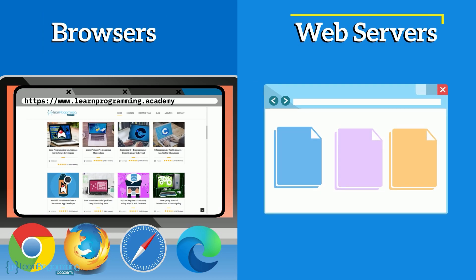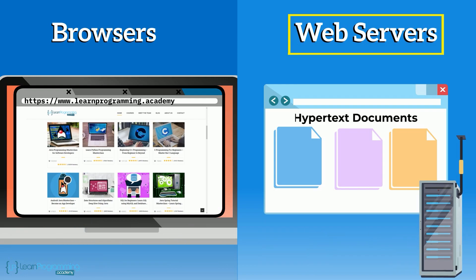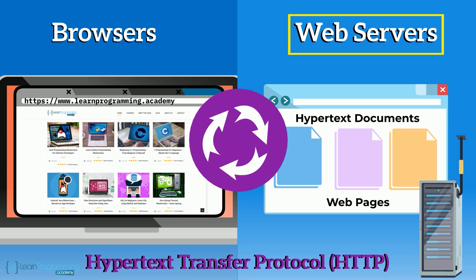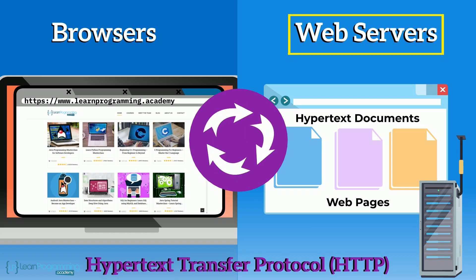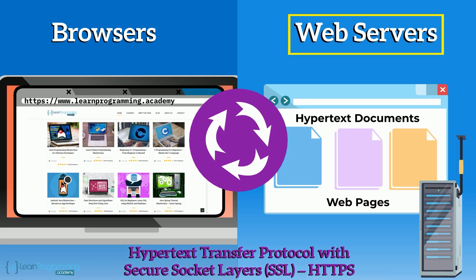Software known generically as a web server, such as Microsoft's IIS or Apache's Tomcat, etc., resides on a computer that contains hypertext documents, or web pages as most of us call them. These pages are transferred between the web server and the browser using the Hypertext Transfer Protocol, HTTP, or Hypertext Transfer Protocol with Secure Socket Layers, SSL — HTTPS.